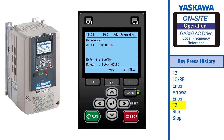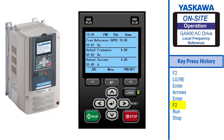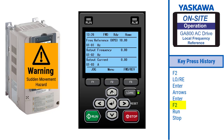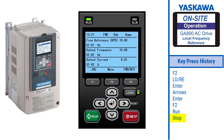Press F2. Make sure the area around the motor or load is clear, as the next step will cause movement. Press RUN. The drive should run, and monitor U102 should display 10 hertz. Press Stop.